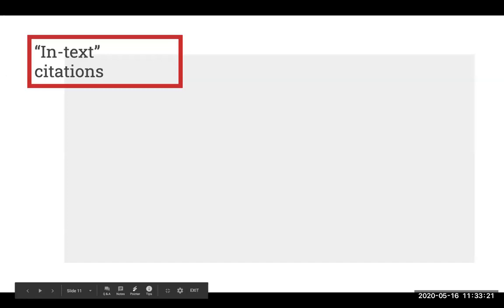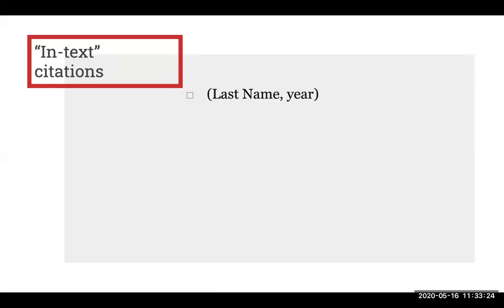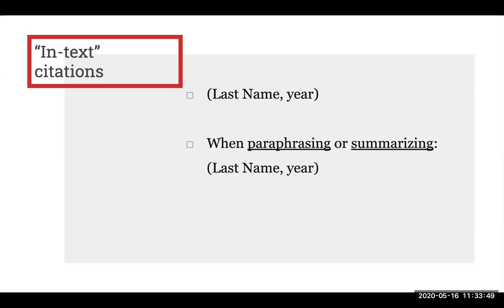So let's break these down a bit. As mentioned, there is an author's last name and a year, all wrapped within parentheses. Now, there's actually one more detail to consider when writing these. Remember when we reviewed quoting, paraphrasing, and summarizing? Well, these will further determine how to format your in-text citation. If you are paraphrasing or summarizing, then you will include the last name, the comma, and the year, similar to the examples we've reviewed so far.